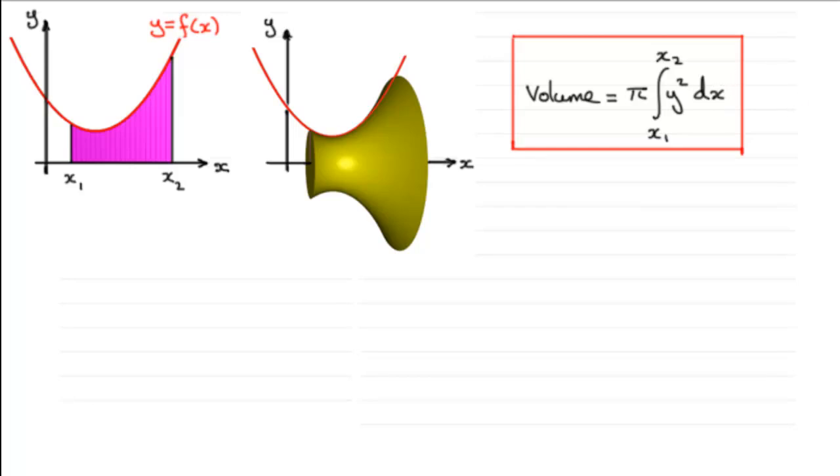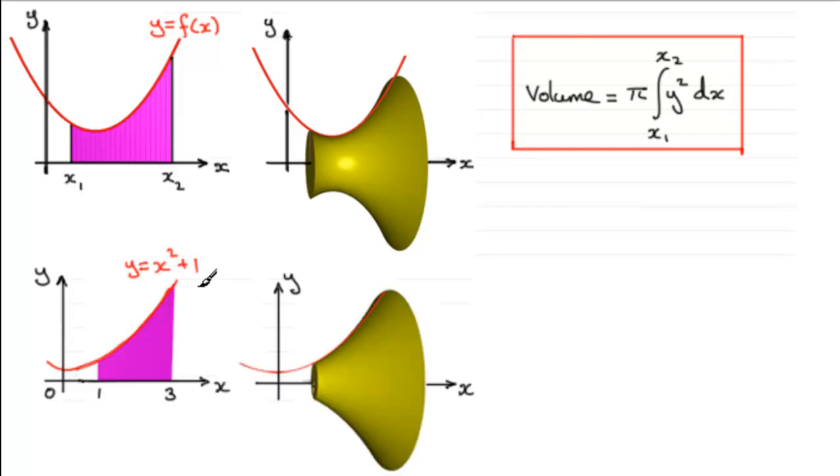So we've got an example here. I've got the curve y equals x squared plus 1. And we have this region here bounded by the lines x equals 1 and x equals 3 and the x-axis. And if we rotate this through two pi radians or 360 degrees about the x-axis, we generate this solid of revolution.